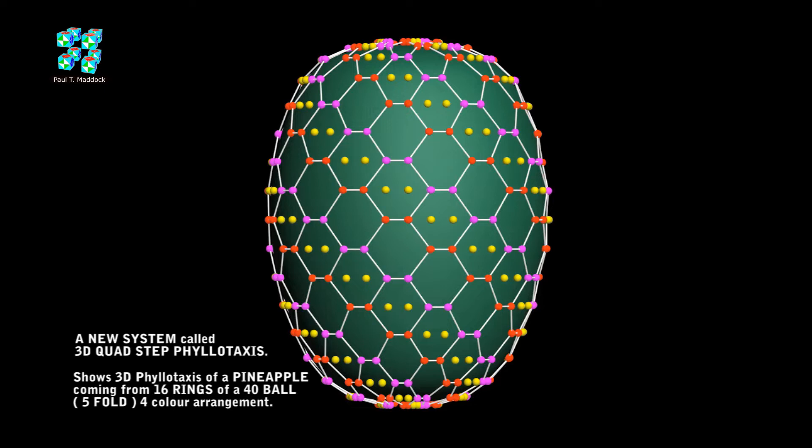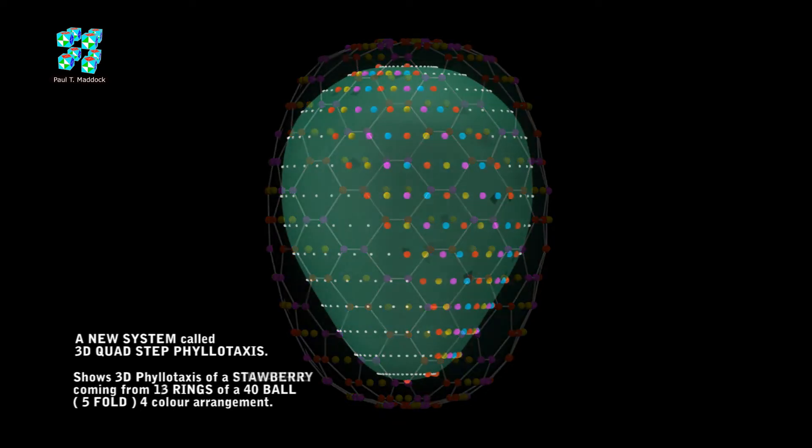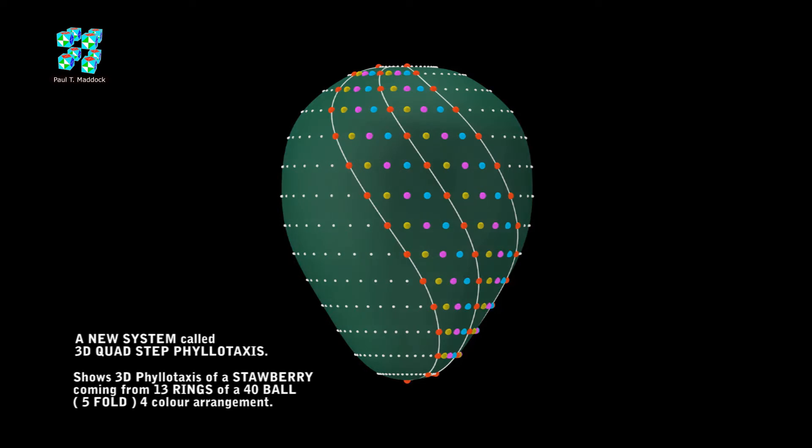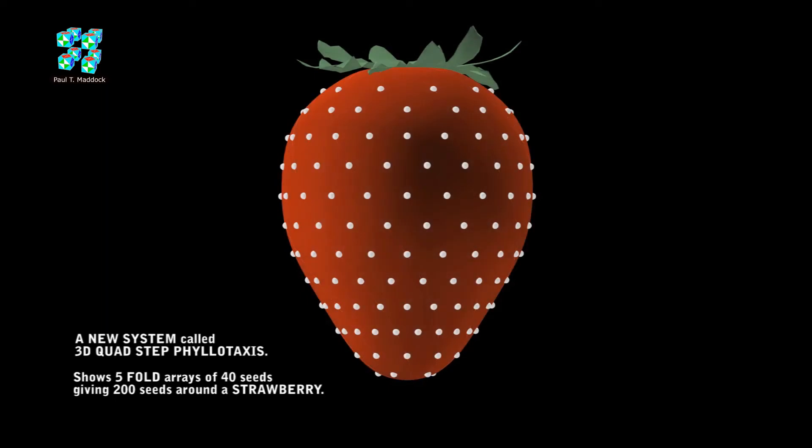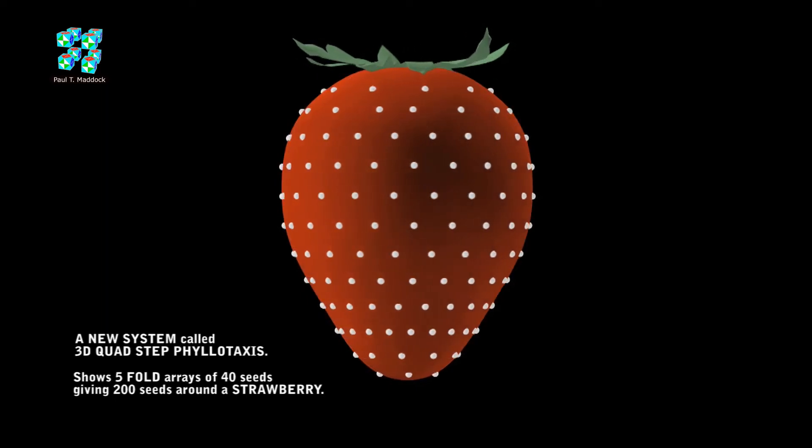By using this 40 ball array I showed that we could produce the geometry of a strawberry also. This uses a five-fold 40 ball arrangement similar to the pineapple but the balls are offset just one ball this time. This shows that a 40 ball five-fold array will give us 200 seeds. Now I'll show you the proper color of the strawberry and show the 200 seeds and give it a three-dimensional look.